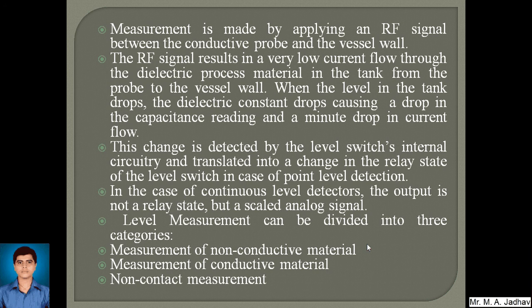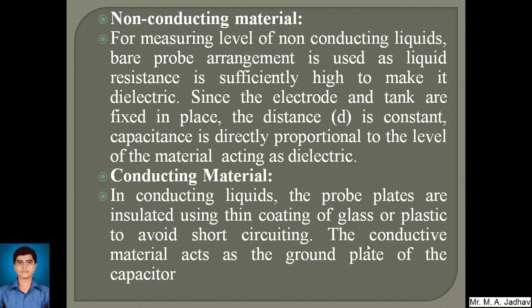In the case of continuous level detectors, the output is not a relay state but a scaled analog signal. Level measurement can be divided into three categories: measurement of non-conductive material, measurement of conductive material, and non-contact measurement. For measuring the level of non-conducting liquids, a bare probe arrangement is used, as the liquid resistance is sufficiently high to make it act as a dielectric. Since the electrode and tank are fixed in place, the distance D is constant. Capacitance is directly proportional to the level of material acting as dielectric. The material itself will act as the dielectric, so bare electrodes can be used without any coating on the probes.